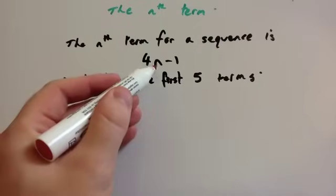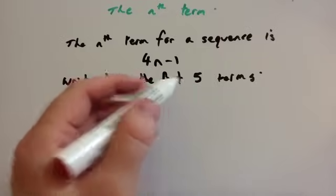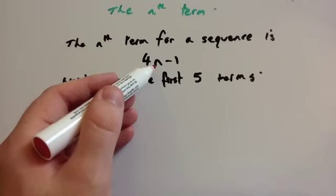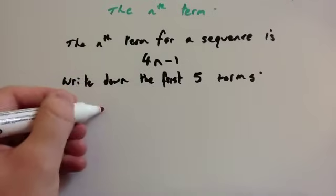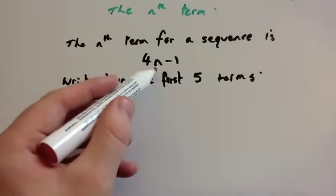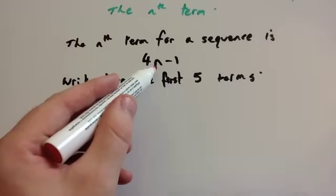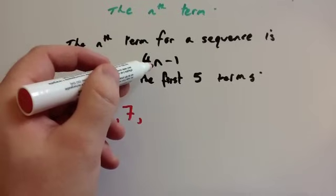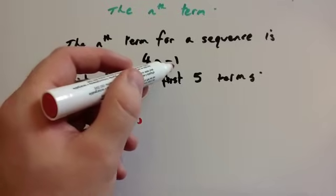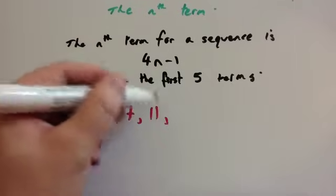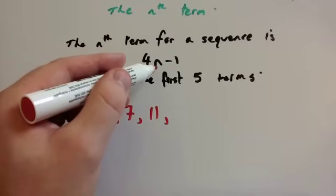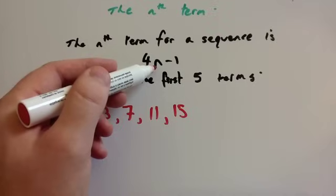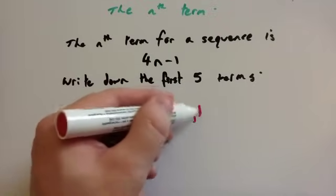Alternatively, n stands for the term you want. For the first term: 4 times 1 is 4, take away 1 is 3. Second term: 4 times 2 is 8, take away 1 is 7. Third term: 4 times 3 is 12, take away 1 is 11. Then 4 times 4 is 16, take away 1 is 15. Finally, 4 times 5 is 20, take away 1 is 19.